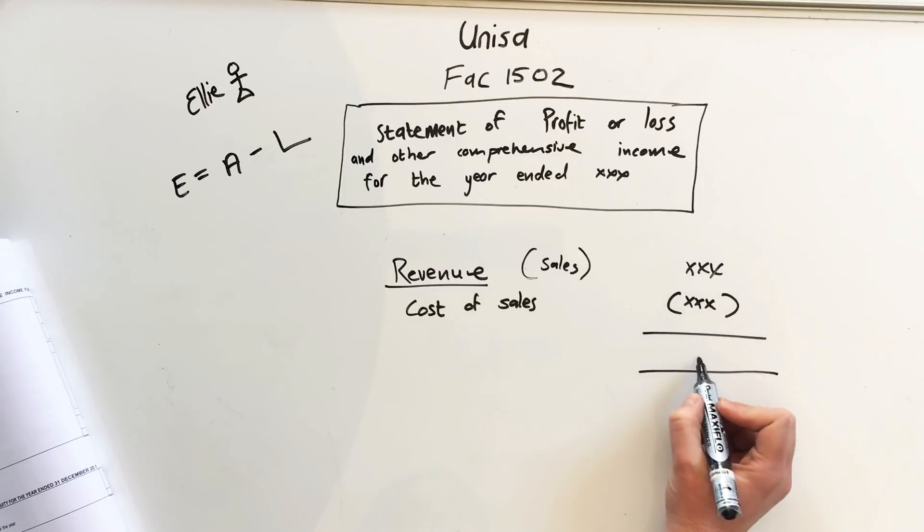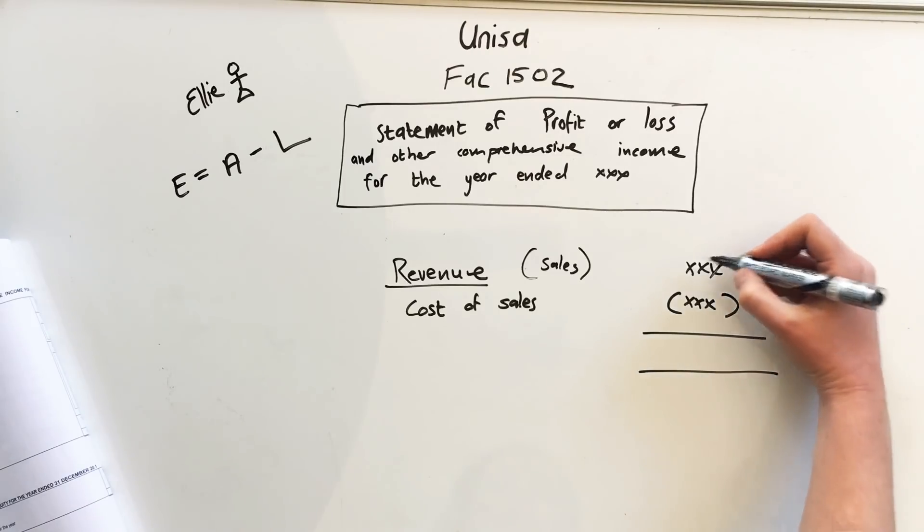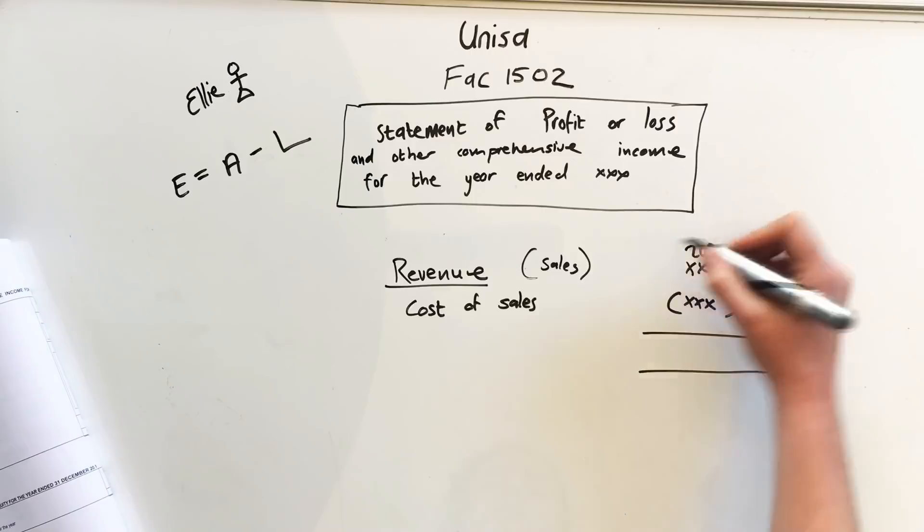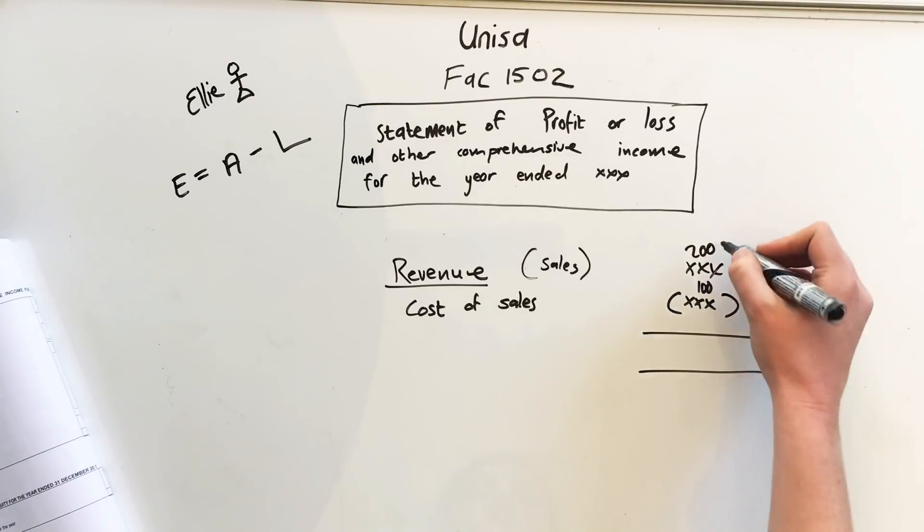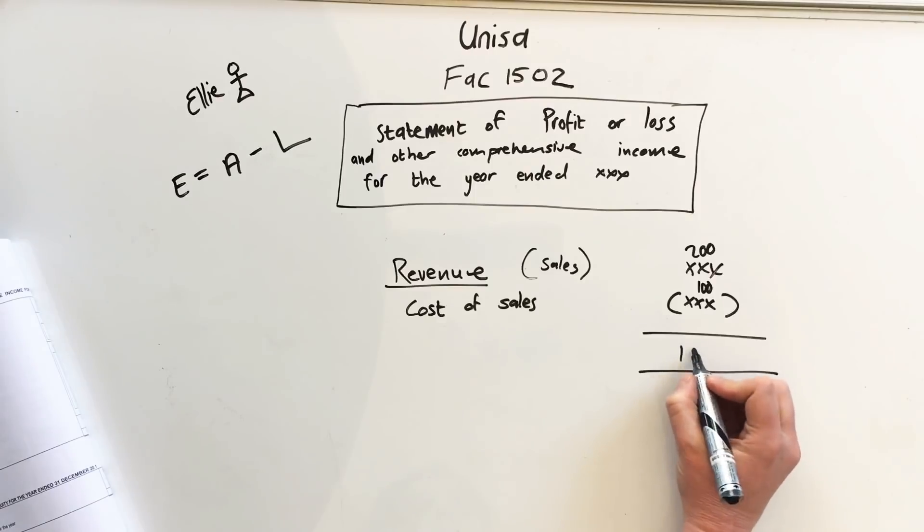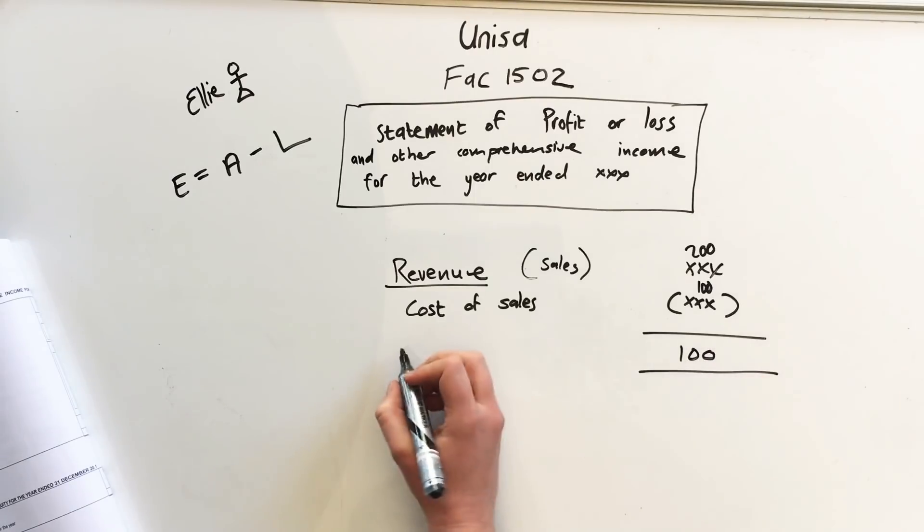So if your revenue was 200 and your cost of sales was 100, then it's 200 minus 100 gives you 100, and this amount is your gross profit. Gross profit.